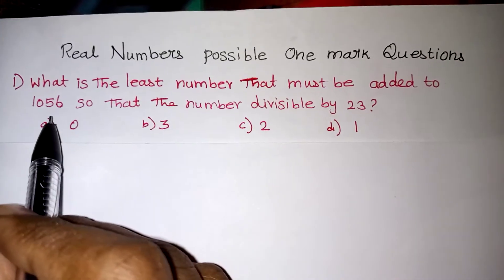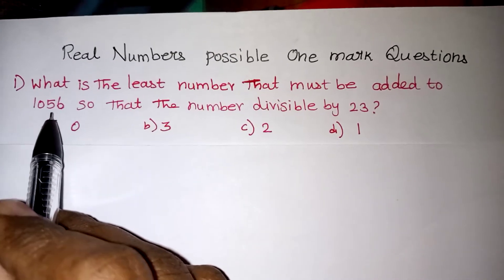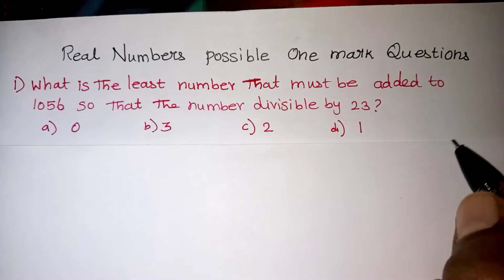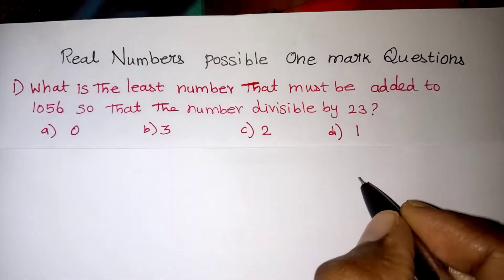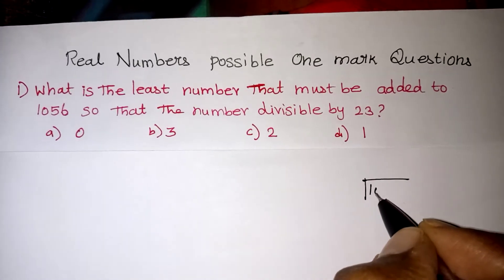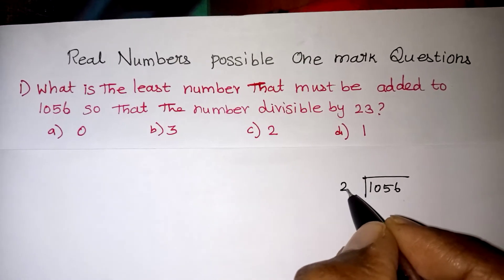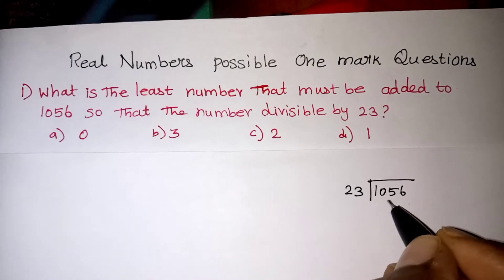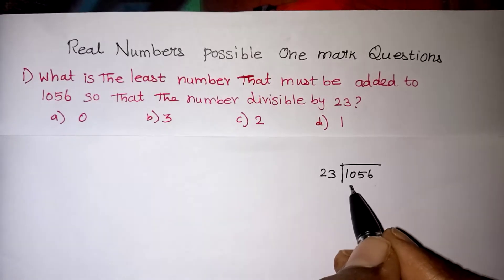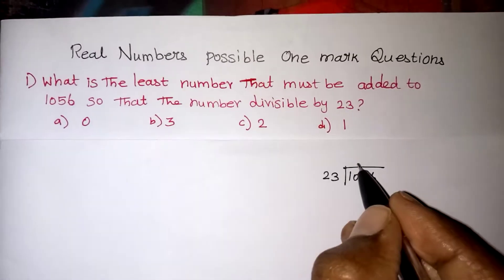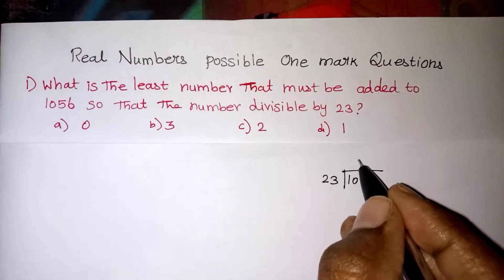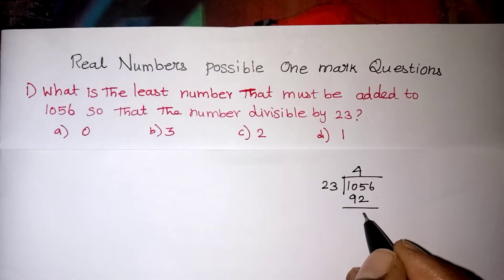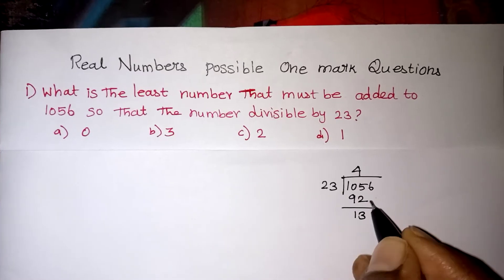What they are asking is: 1056 should be added with what number so that it will come in the 23 times table? Very easily, what we can do is divide 1056 by 23. So for 23 into the 105 part, 23 times 4 will give you 92.